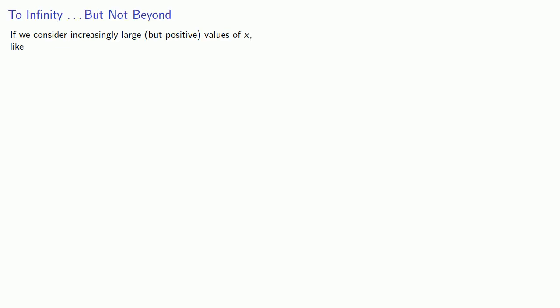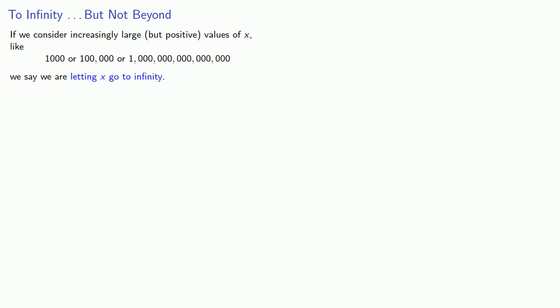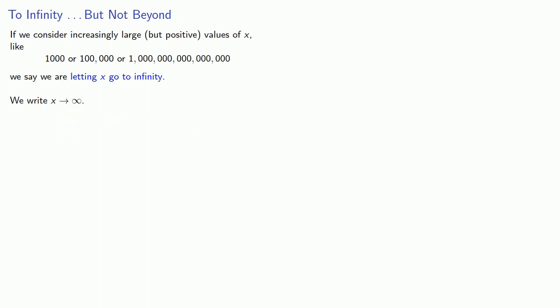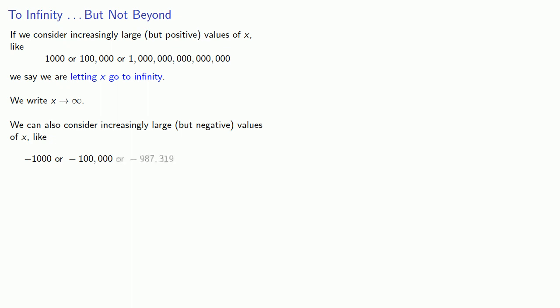If we consider increasingly large but positive values of x — for example, 1,000 or 100,000 or one quadrillion — we say that we are letting x go to infinity, and we write it as x → ∞. We can also consider increasingly large but negative values of x, like negative 1,000 or negative 100,000 or negative a whole lot, and we would write x → −∞.